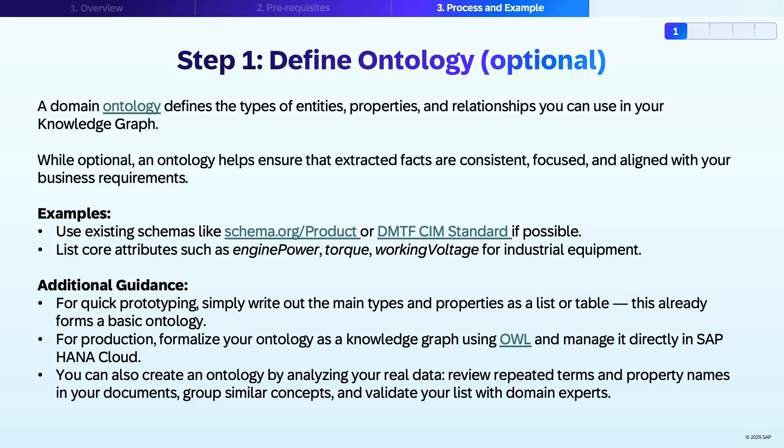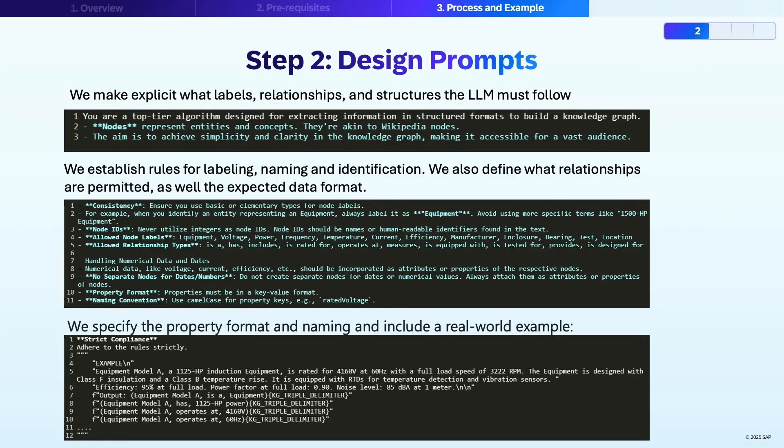The second step is to design a prompt. We make explicit what labels, relationships, and structures the LLM must follow. We establish rules for labeling, naming, and identification. We also define what relationships are permitted, as well as the expected data format. We specify the property format and naming and include a real-world example.